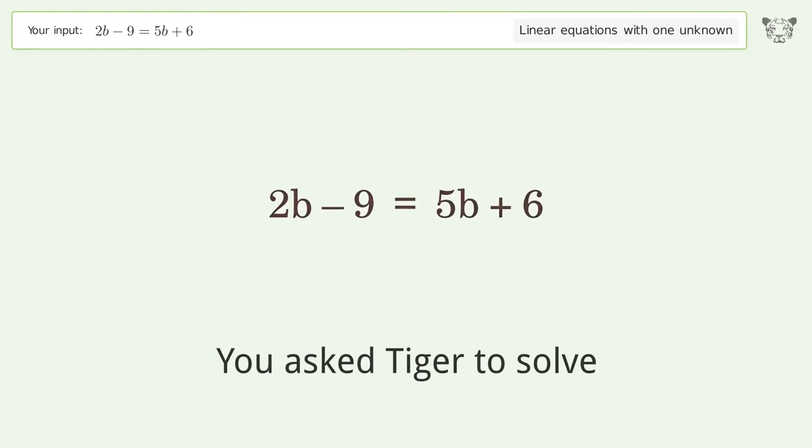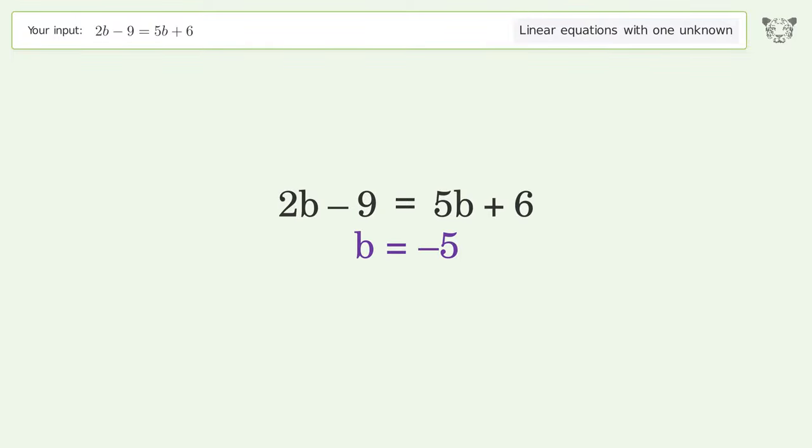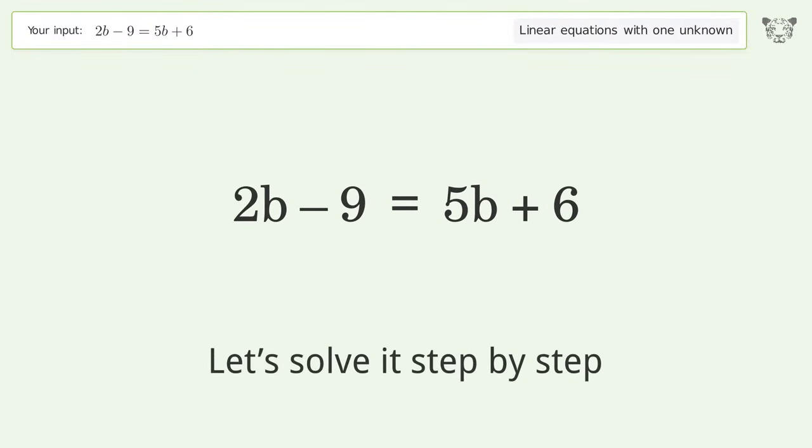You asked Tiger to solve. This deals with linear equations with one unknown. The final result is b equals negative 5. Let's solve it step by step.